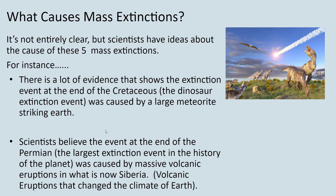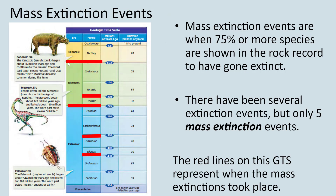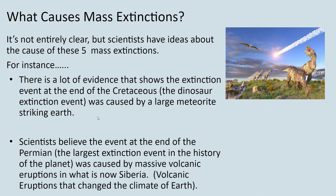There's a lot of uncertainty about most of them, but there's strong evidence for what caused the last one. For the Cretaceous mass extinction, a lot of evidence shows it was caused by a large meteorite striking Earth somewhere around the Yucatán in Mexico. That event started this mass die-off — about 76 to 80 percent of all species, including the dinosaurs, were eliminated during this extinction.